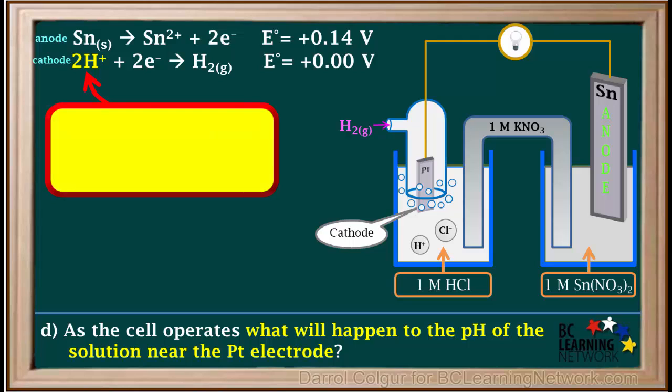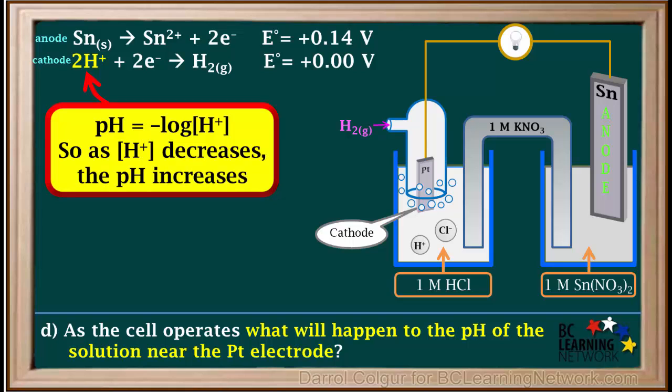Remember from the acid base unit that pH is the negative log of the hydrogen ion concentration. So as H⁺ is used up and the concentration of H⁺ or acidity decreases, the pH will gradually increase near the platinum electrode.